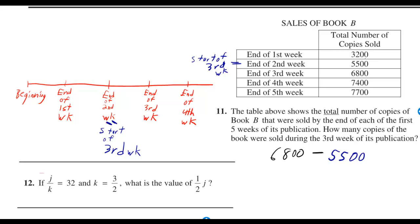Each of these numbers tells you how many magazines were sold by the end of whatever week, and they told us 6,800 magazines were sold by the end of the third week.